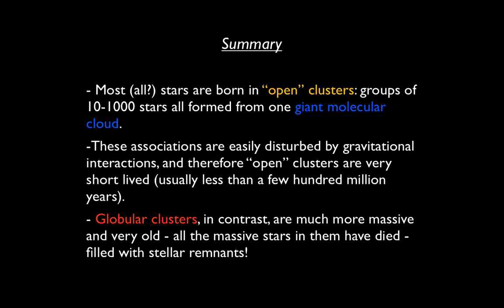In summary, most if not all stars are born in open clusters, groups of 10 to 1,000 stars that are all formed from one giant molecular cloud. These associations are easily disturbed by gravitational interactions, and therefore open clusters are very short-lived, usually less than a few hundred million years. We know this because all the open clusters we see are extremely young and have very big and bright and massive O stars in them.